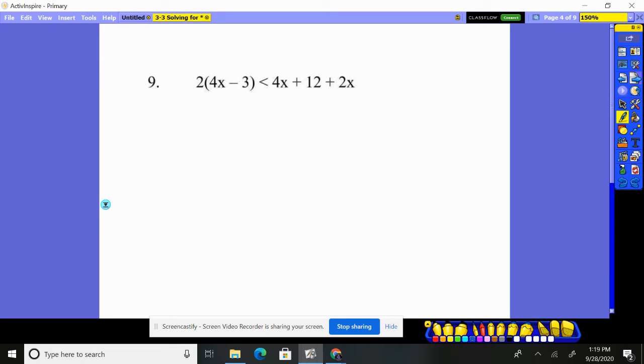Number nine. I'm going to distribute through. It's going to give me 8x - 6 < 6x + 12. Now I'm going to move my smaller variable. Subtract 6x.